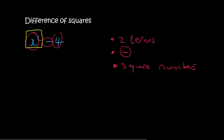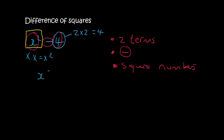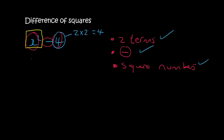x squared is a square number because x times x gives me x squared, and 4 is a square number because 2 times 2 is 4. If I asked you x squared minus 5, that wouldn't work because 5 is not a square number. So if you can fulfill these three categories, when you factorize this it becomes two brackets — you put the first square root, then the second, and separate them with a plus and a minus. That's the new kind of factorizing, and it's called the difference of squares.